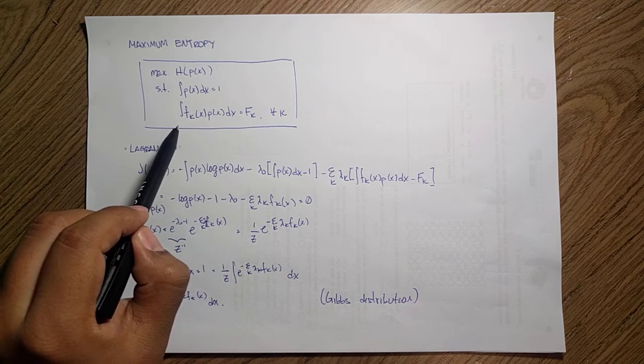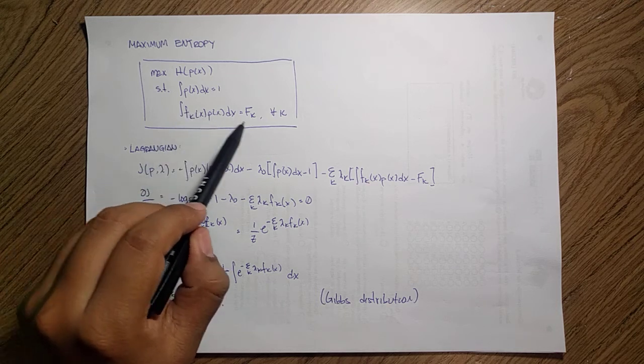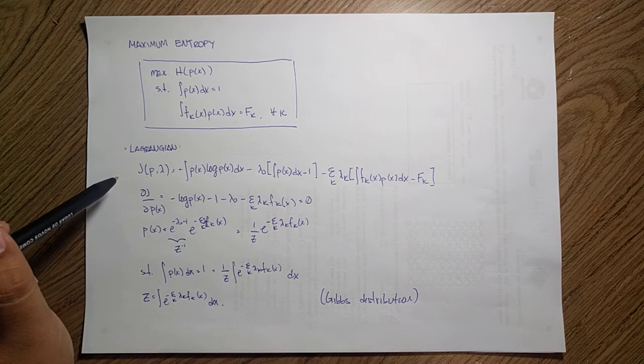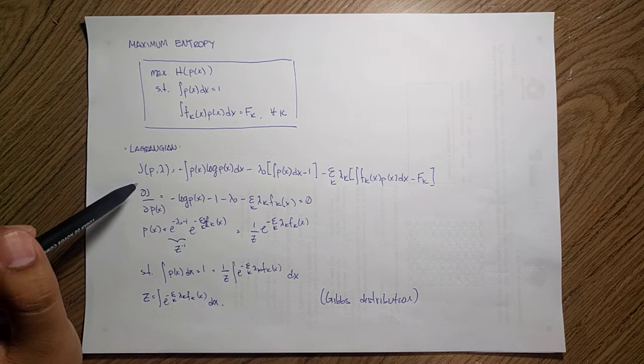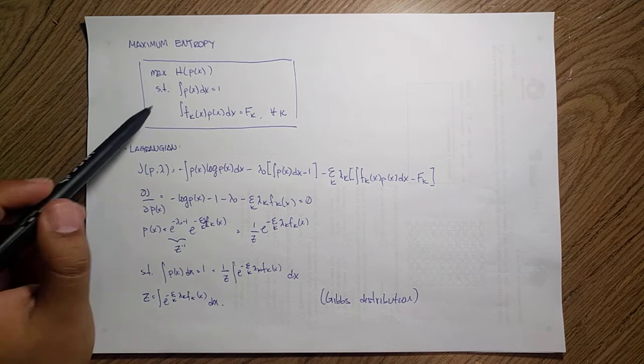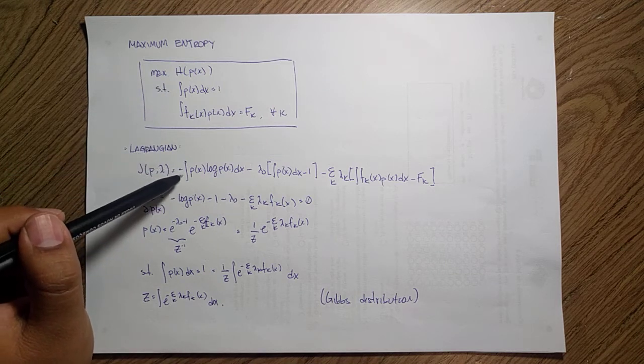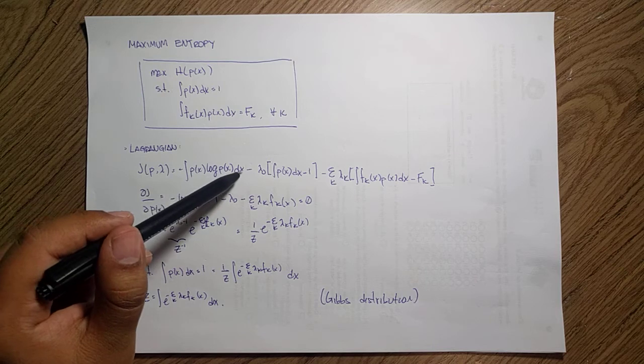We can do that by solving the Lagrangian. We're going to follow the same approach that we did for the Gaussians. Basically we want to form this Lagrangian over here. We're just plugging in the entropy, the p(x) times log of p(x), and it's a negative one.